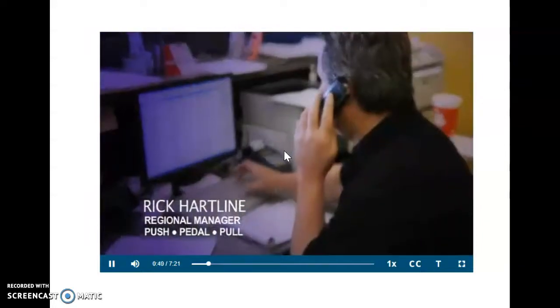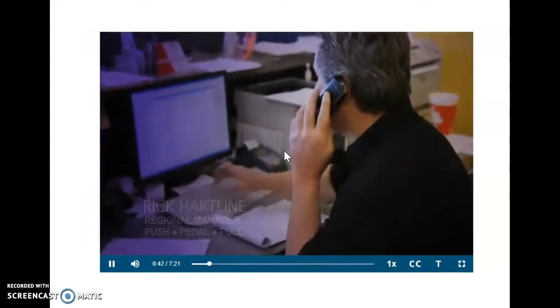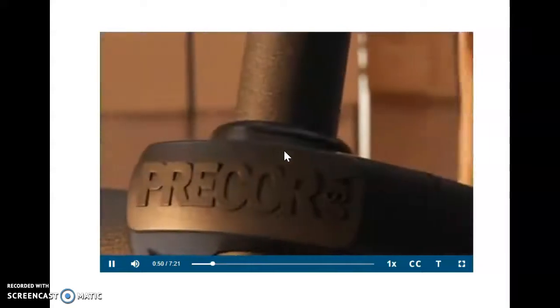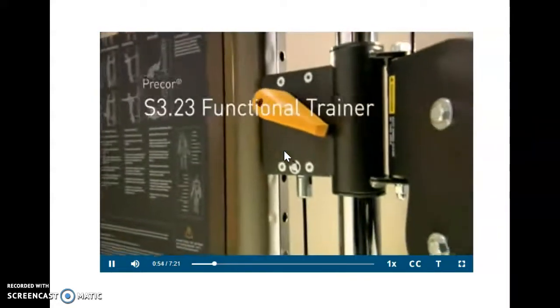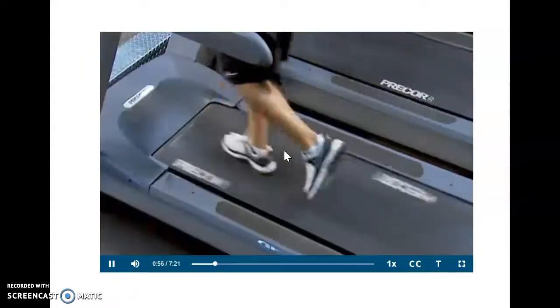As a Precor dealer, Rick Hartline has witnessed the success of these products firsthand. Precor has created a couple of segments of this industry that didn't even exist. Their first big innovation was in 1996 when they came out with the first elliptical. They're mostly known just for their quality. Precor machines are so well-made, Rick encourages customers to think of them as lifetime purchases.